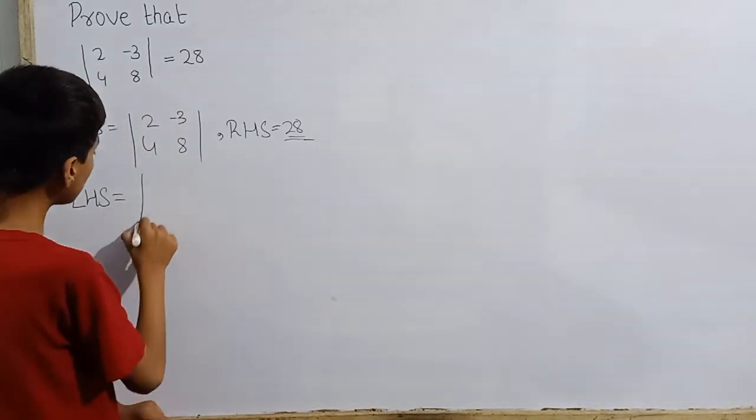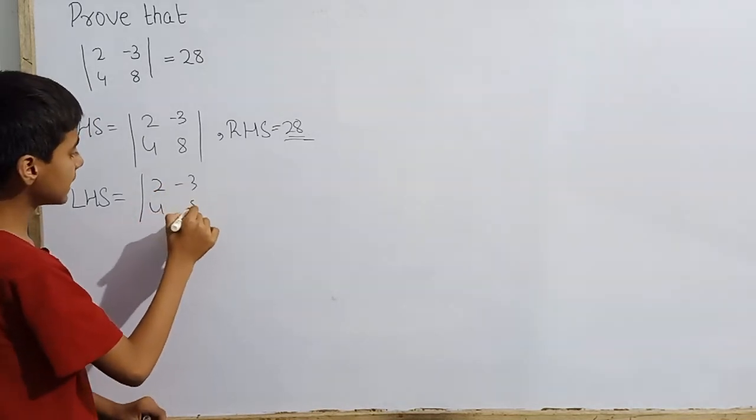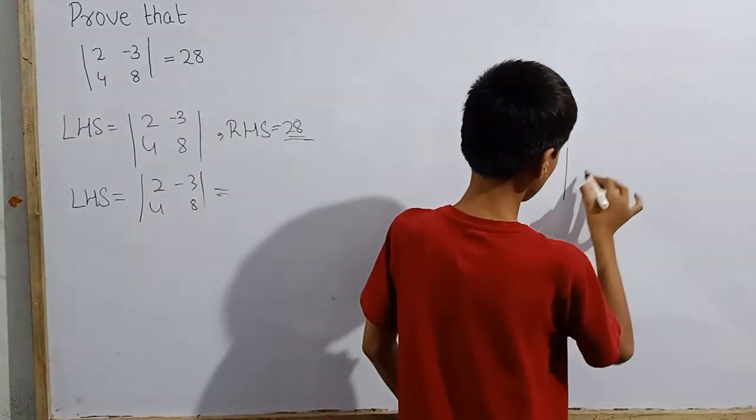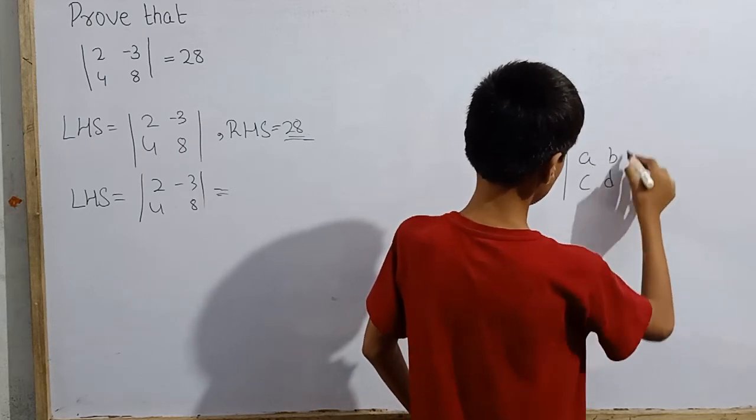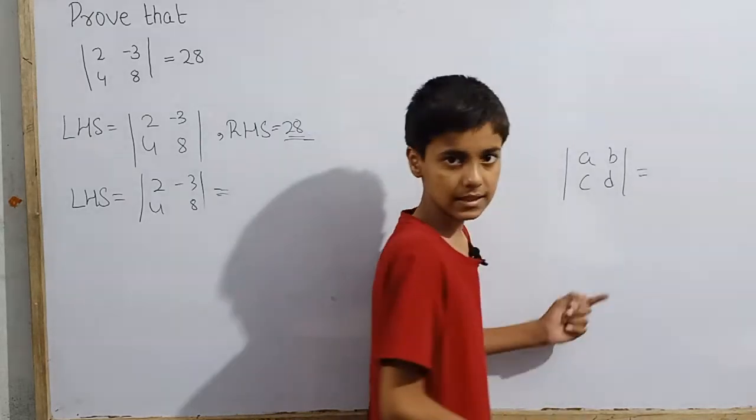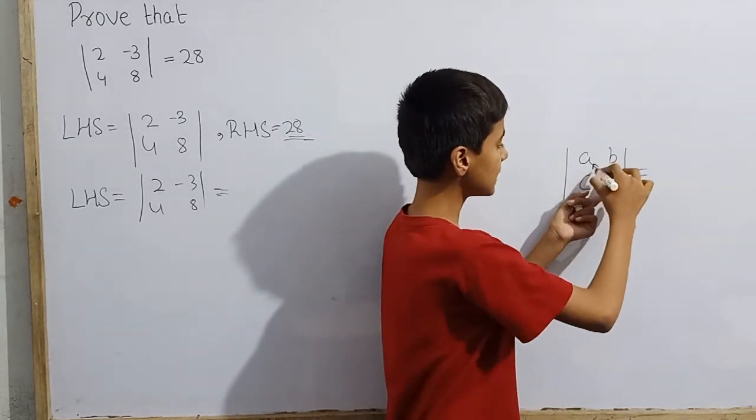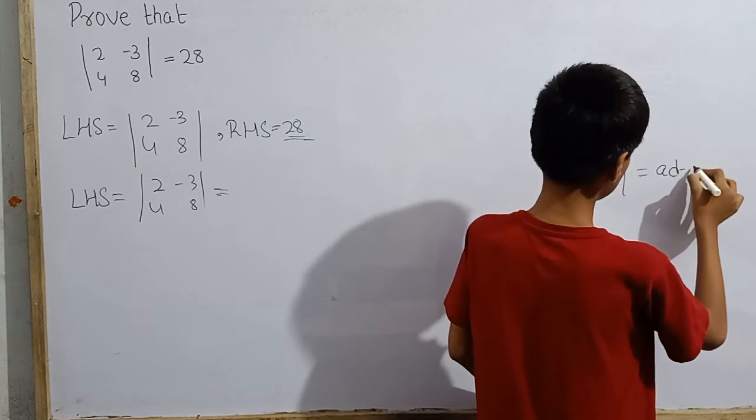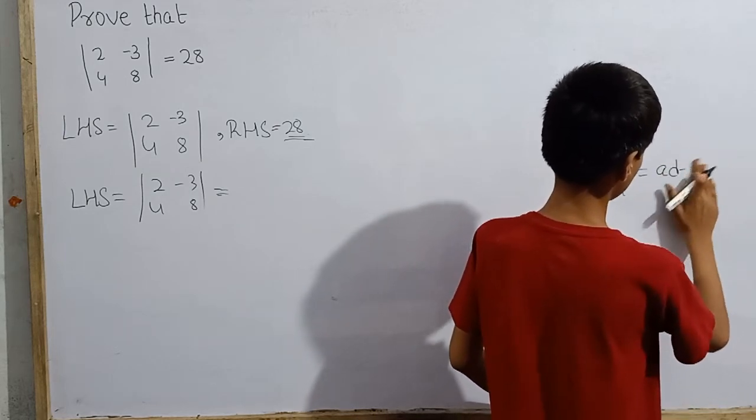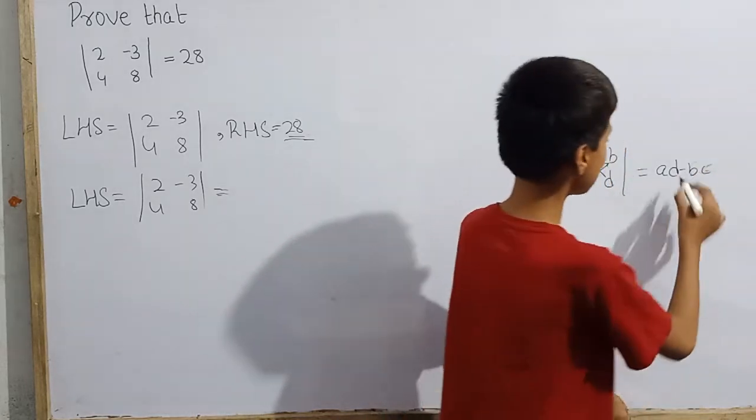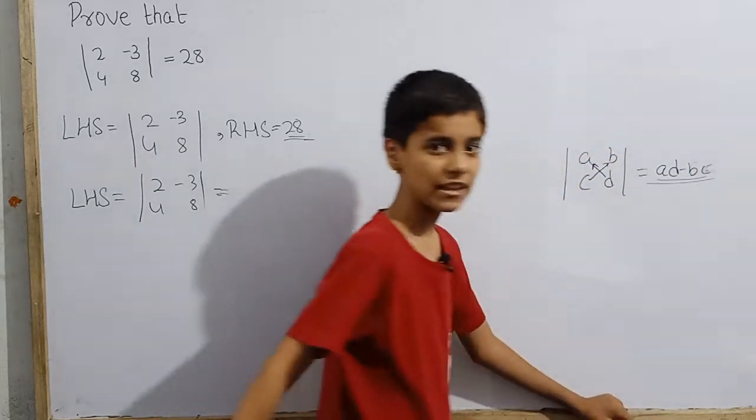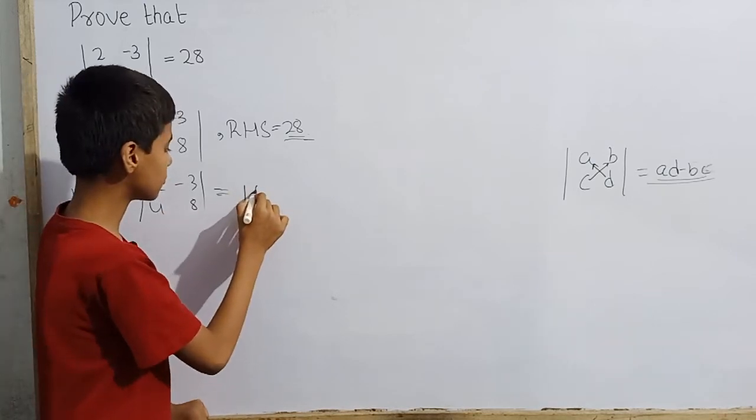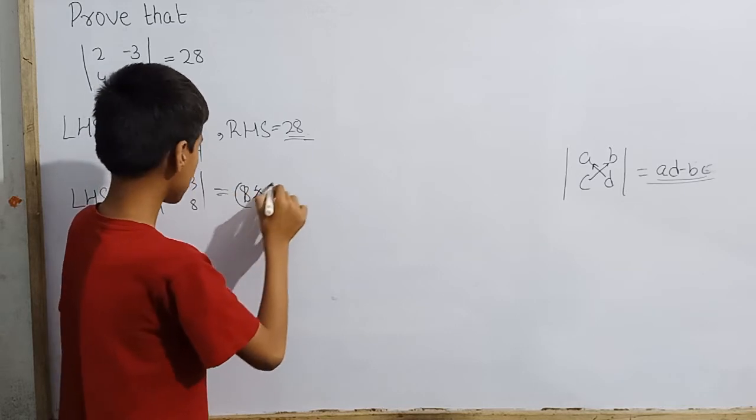So LHS is 2 into 8, or you may call it times, and here I have my final value answer. Same way we need to solve this - this is 8 into 2, and minus 4 into minus 3.